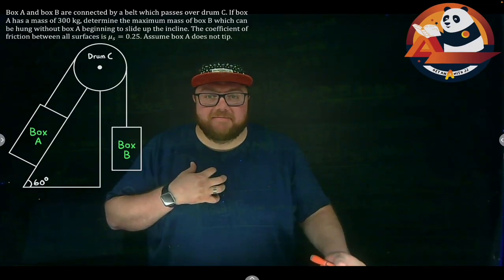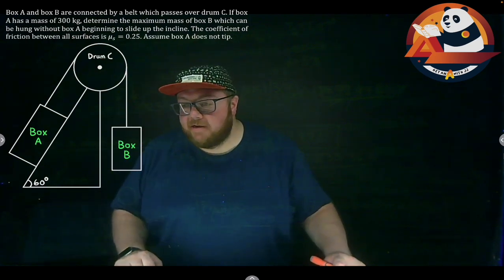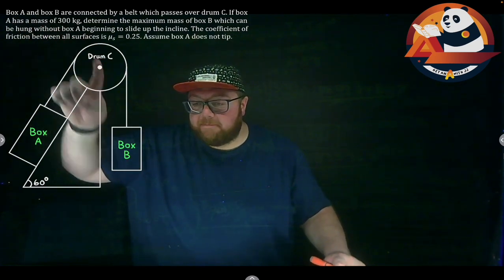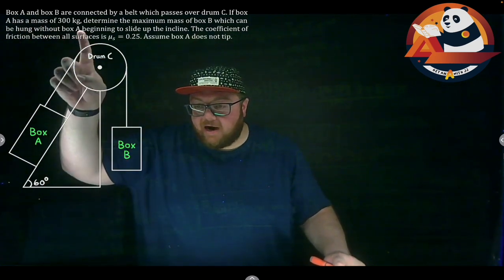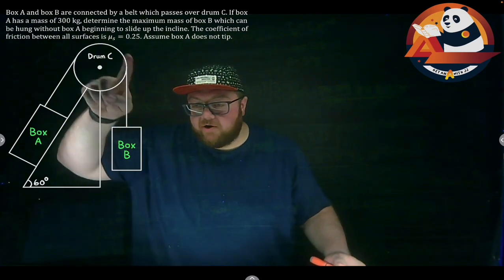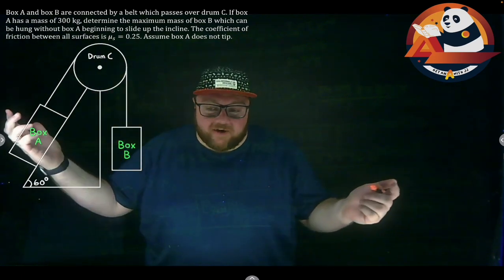All right, well, welcome everyone. I am JJ. Let's tackle an example problem. So we have box A and B are connected by a belt which goes up and over drum C. So we're using a belt friction problem here.